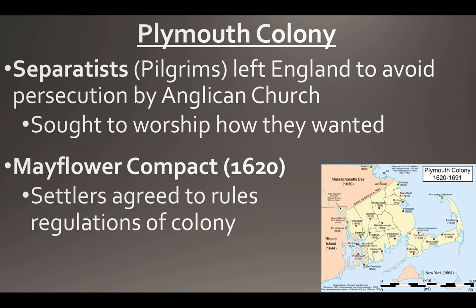Moving north, the Plymouth Colony in modern-day Massachusetts was fueled by separatists — also called Pilgrims. These people left England to avoid persecution by the Anglican Church and to worship as they chose, following the Reformation conflicts. They were actually aiming for the New York or Virginia area but ended up in Massachusetts. They established the Mayflower Compact in 1620, where they all agreed to the rules and regulations of the colony ahead of time — effectively the first social contract in the New World.